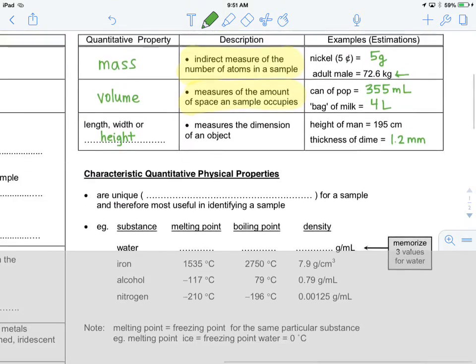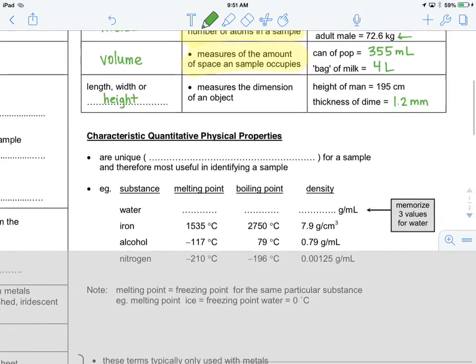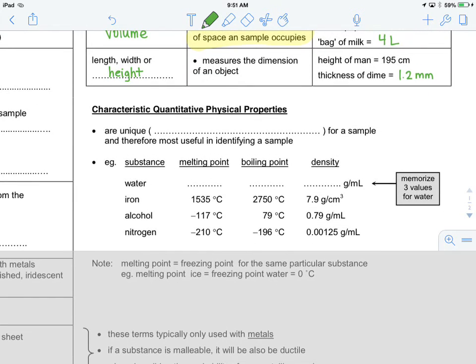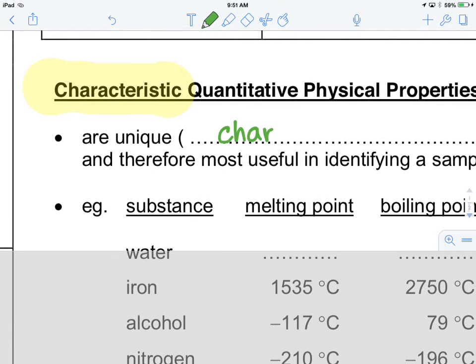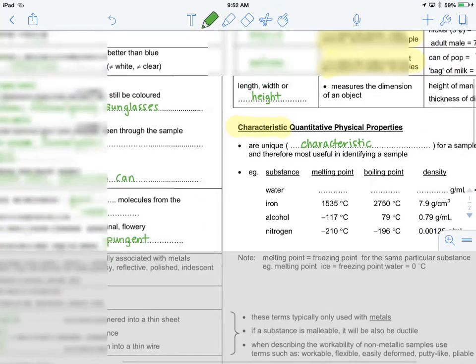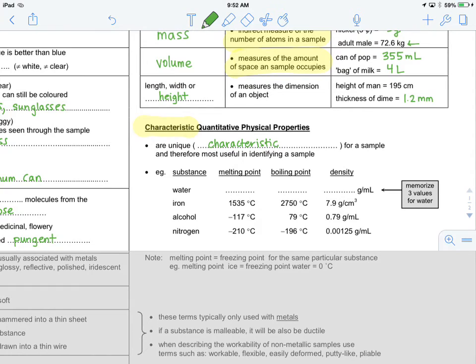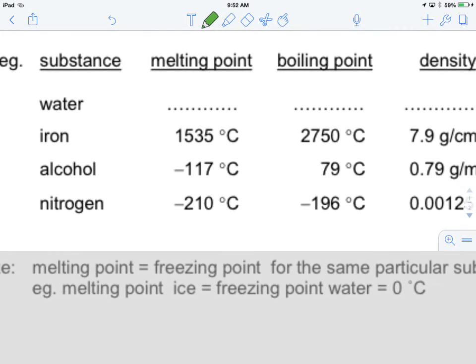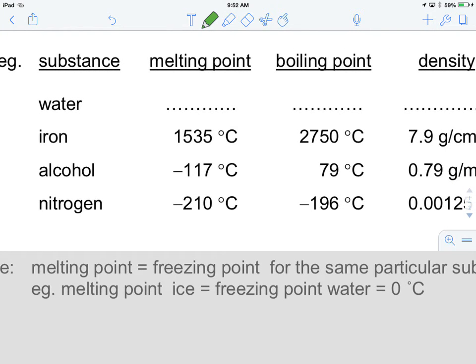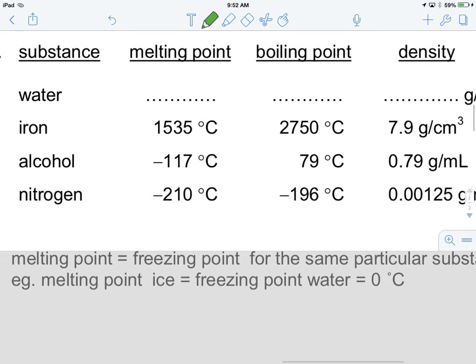So, these are some examples of quantitative physical properties. There are some that we call characteristic. And the reason that we call them characteristic is because they're unique. They're unique for every single sample that we have. And so, therefore, they can be used to identify a sample. Typical characteristics, physical, quantitative characteristics, are things such as the melting point, the boiling point, and the density of an object.